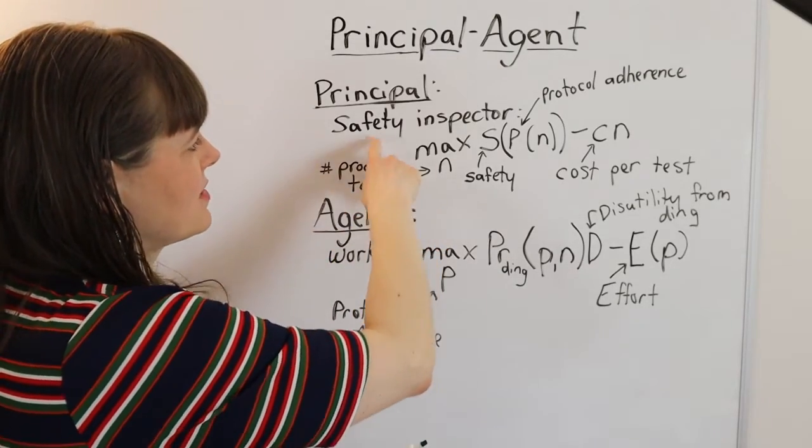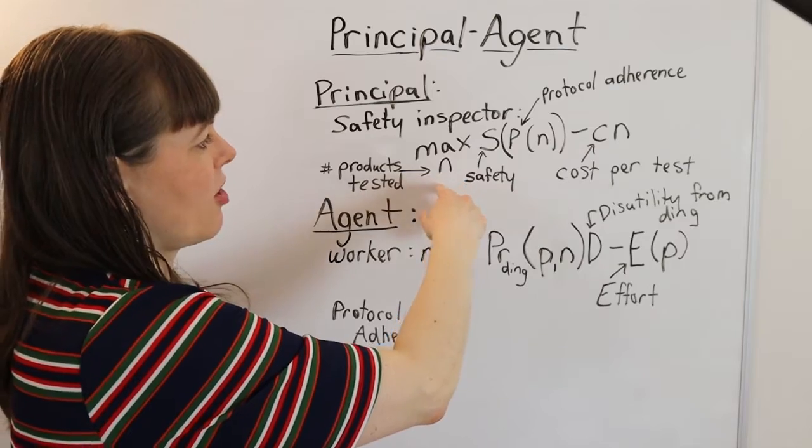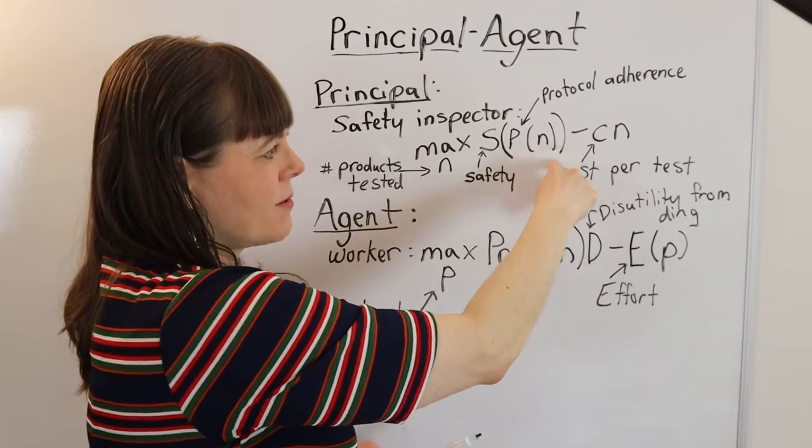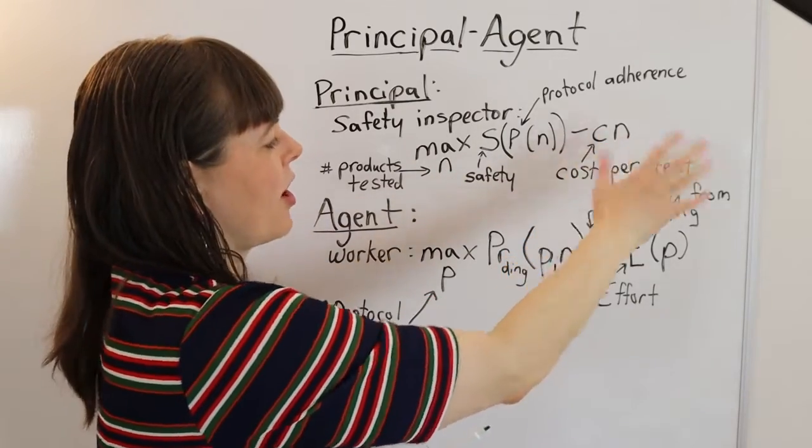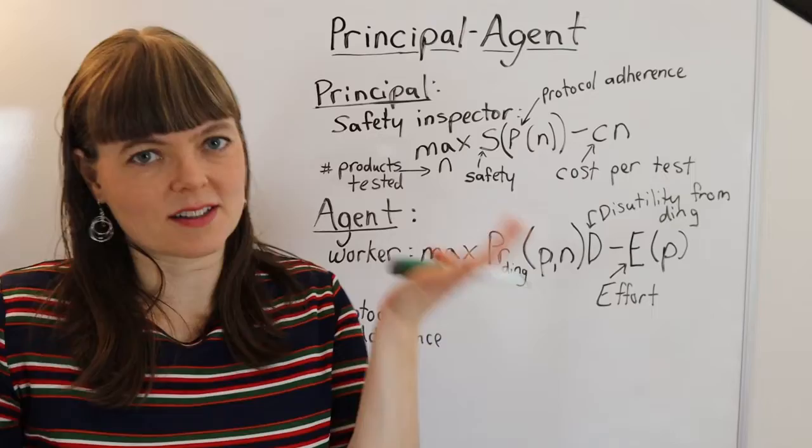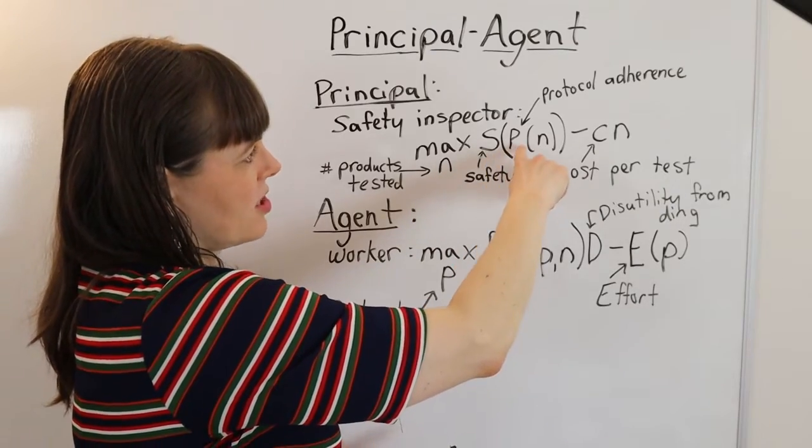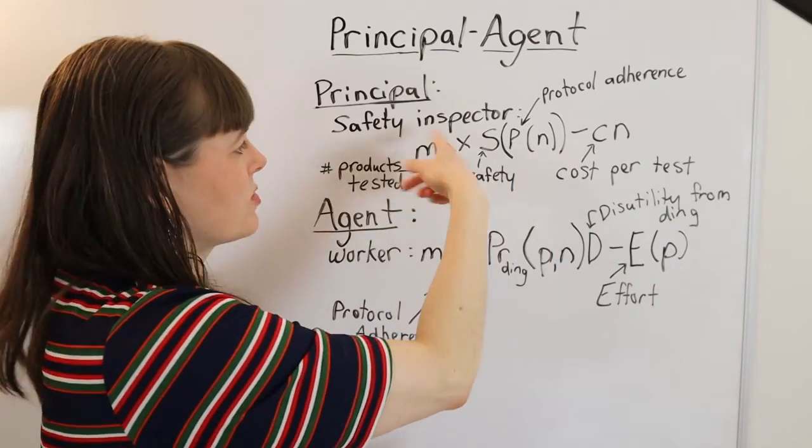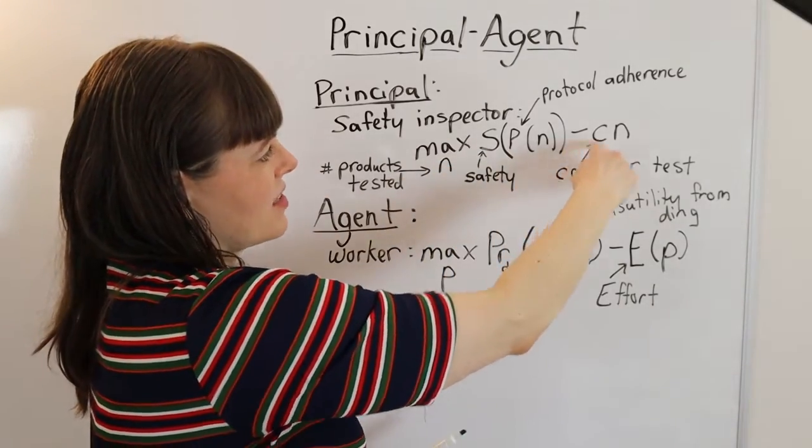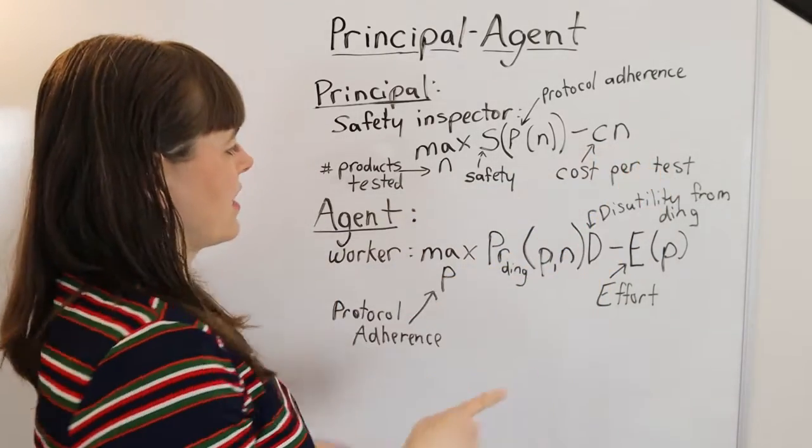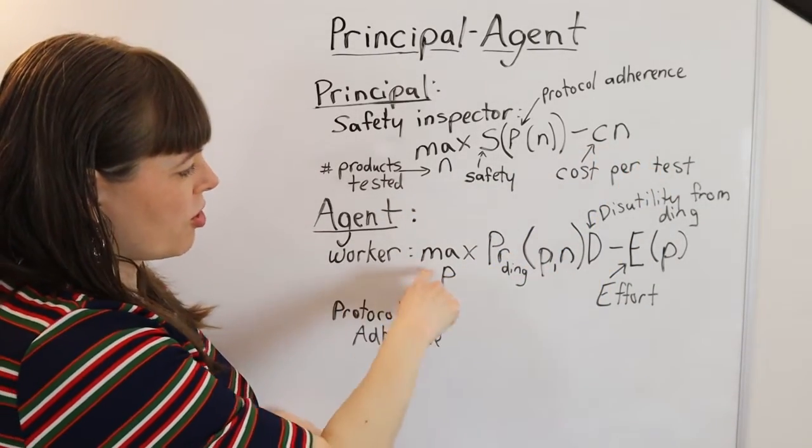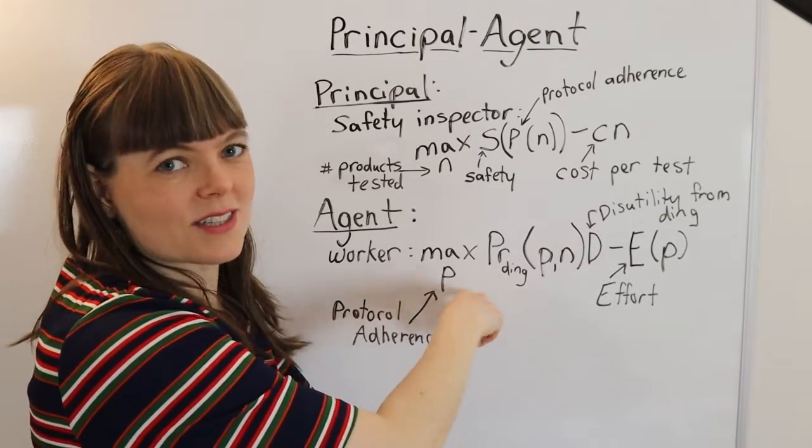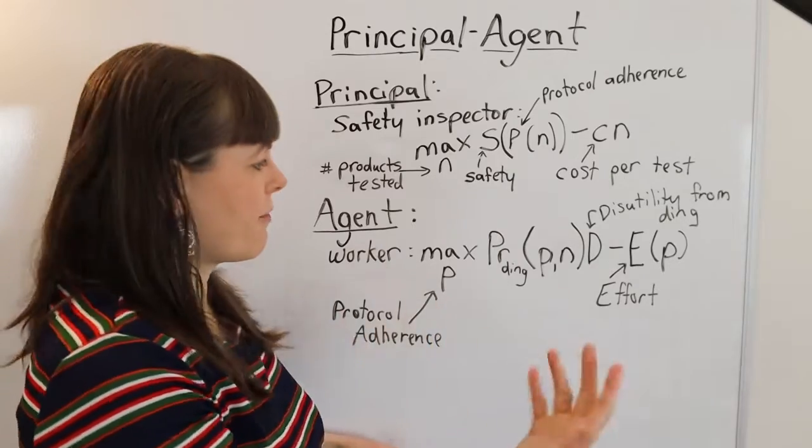And what we have here is that the safety inspector is trying to figure out how many products do you need to test in order to optimize safety minus the total spending you're doing on these tests. I mean, it's a classic cost benefit, where safety is a function of the protocol adherence of the worker, which is a function of how often you test these products. And the costs are simply the cost per test times the number of tests. And then we have our worker who is deciding how much do you adhere to protocol, how sloppy are you with your job, because that's very effortful.